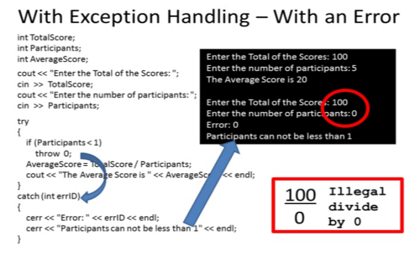Running the program again, the total score is 100 and the number of participants is zero. The if statement is going to test the number of participants, find out it's a zero, so we'll throw an error instead of doing the divide. When the error is thrown, we skip the rest of the try block and immediately go to the catch to catch the error of zero. We'll display a message saying error zero — participants cannot be less than one. Anything else we need to do, such as closing files or closing a network, we can do in here to tidy things up before the program ends.